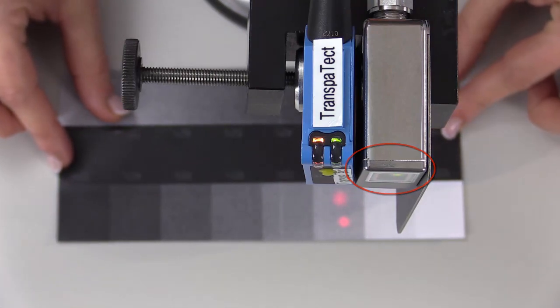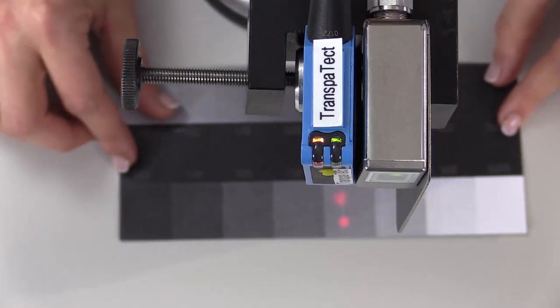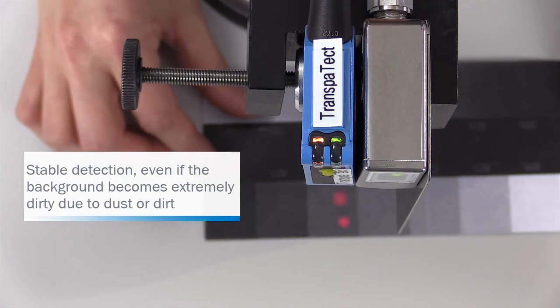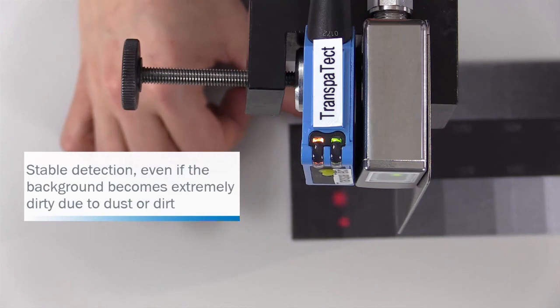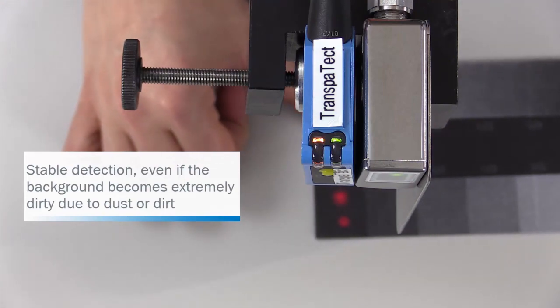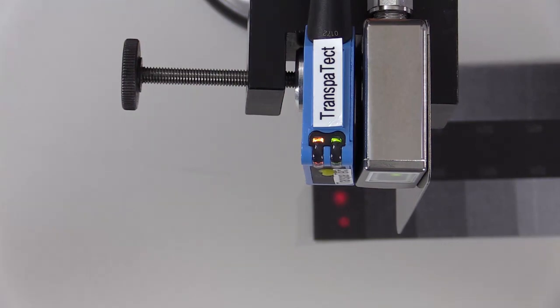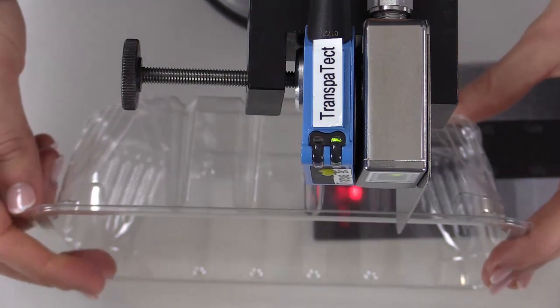While our smart competitor switches already at 80%, which means a change of remission of only 20%, our new Transpatect works still reliably. Even a change of remission of 50%, 60% or even 70% are not a challenge for our new Transpatect. And transparent trays are still detected reliably.